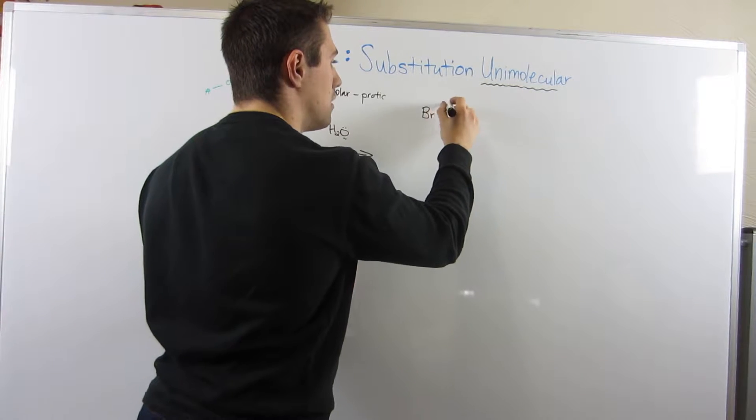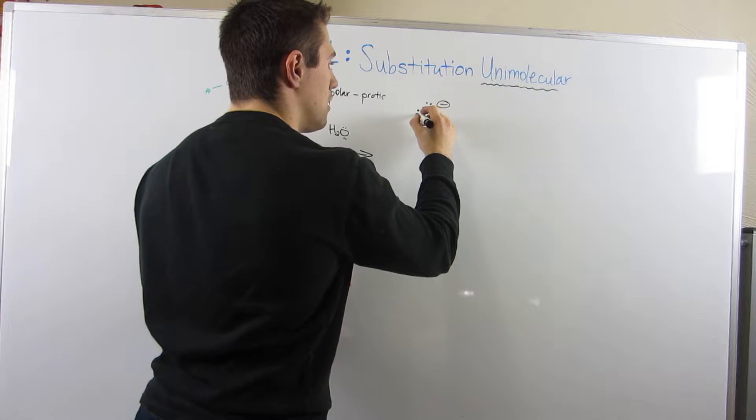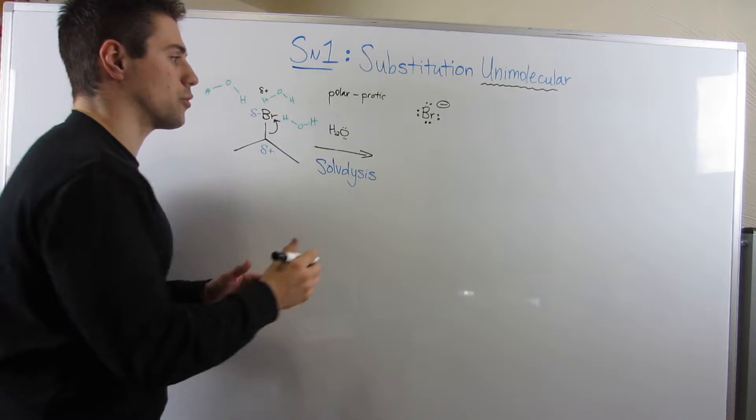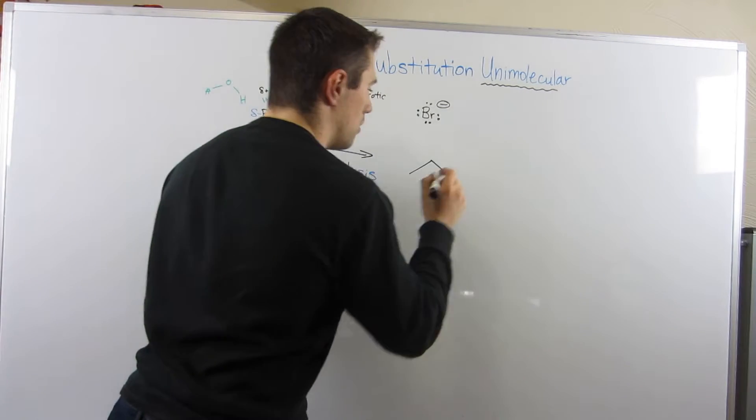When you have some leaving group - remember, bromine is a good leaving group - if you have some leaving group kind of weened off, and it leaves due to the solvent help kind of pulling it off, this is something called solvolysis. It's like the solvent kind of broke lysis this bond. So if you think about it, we have a Br-. Remember, Br- is stable. That's a good thing. We're okay with that. But here's where we're left over with.